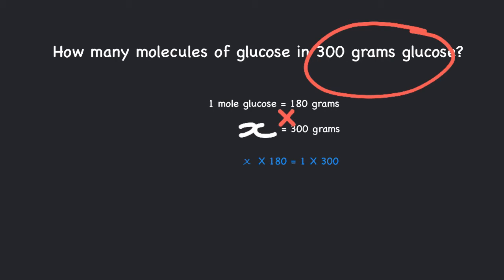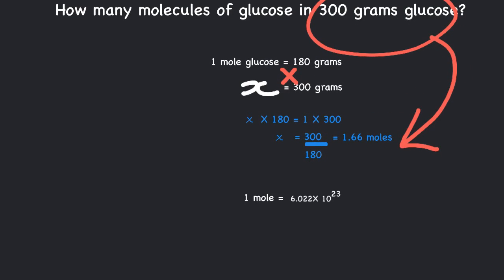Cross-multiplying and solving for x: x = 300 ÷ 180 = 1.66 moles. So our sample has 1.66 moles. One mole has 6.022×10²³ molecules — so how many molecules does 1.66 moles of glucose have?